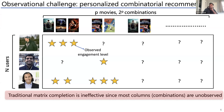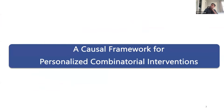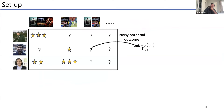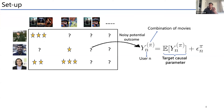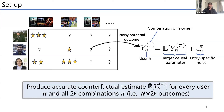The causal framework for personalized combinatorial interventions: think about each entry as a potential outcome Y_n^π, where n is the nth user and π is the combination. The potential outcome is noisy — model-based uncertainty from measurement error or stochasticity. What we want to learn is the expected engagement level E[Y_n^π], and the goal is to estimate this for all n and all 2^p combinations.